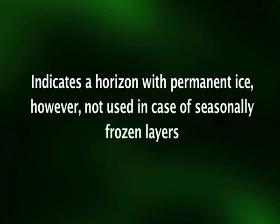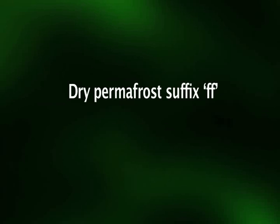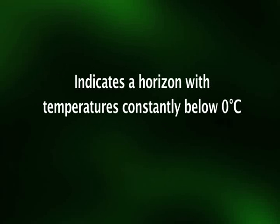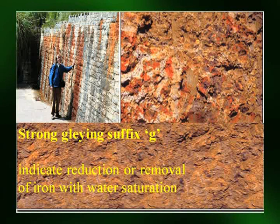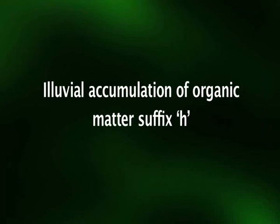Suffix 'f' indicates a horizon with permanent ice, not used for seasonally frozen layers. Suffix 'ff' indicates dry permafrost — a horizon with temperatures constantly below zero degrees centigrade. Suffix 'g' indicates strong gleying — reduction or removal of iron under water saturation, with redox concentrations and chroma of two or less. Suffix 'h' is used with B horizons to indicate accumulation of illuvial organic matter and sesquioxides which coat sand and silt particles.